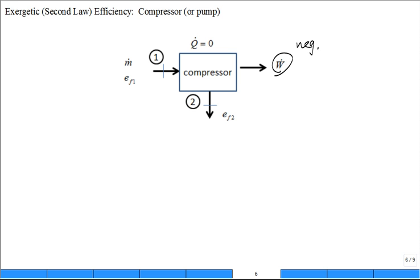And you go in here and you do a control volume analysis and you write the exergy balance equation and it's not going to look any different than what we just had for our turbine. Minus W dot plus M dot EF1 minus EF2 minus exergy destruction rate.